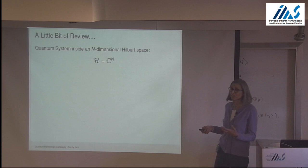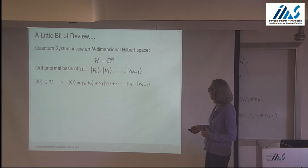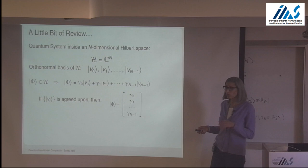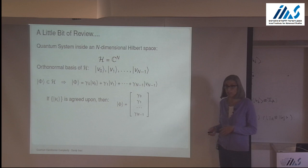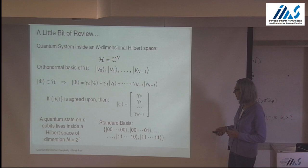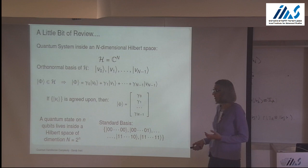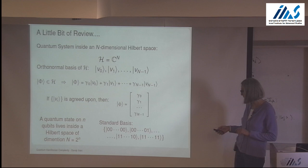We're considering a quantum system sitting inside an n-dimensional Hilbert space, and we can imagine an orthonormal basis V0 through Vn-1. Any state inside this space can be expressed as a superposition in this basis. Once we agree on a basis of representation, we can represent our state as a column vector. More often than not, the underlying basis is the standard basis. For n qubits, the size of the Hilbert space is 2 to the n, and the standard basis is just all n-bit strings.